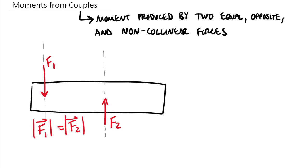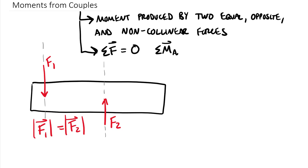We essentially get a moment from these couples because if you sum forces and moments relative to just these two forces, your sum of forces is going to equal zero — equal forces in opposite directions sum to zero. But it turns out if you sum your moments, this is a vector computation about any point, you'll end up with the couple of these two forces.